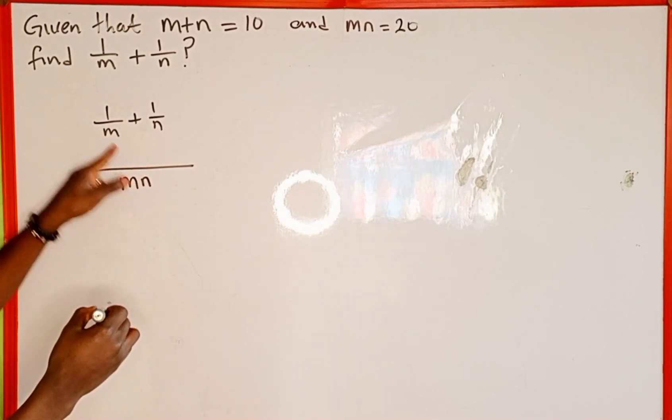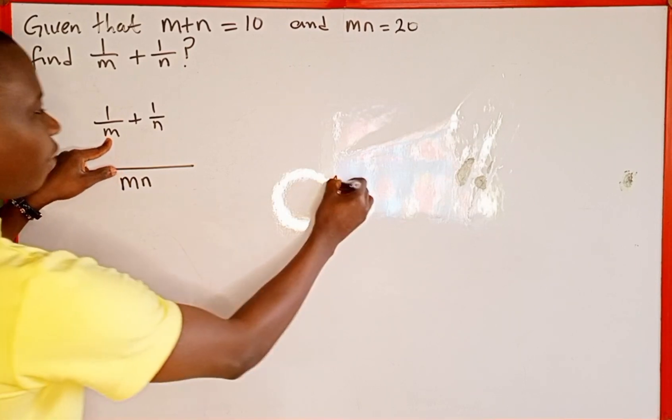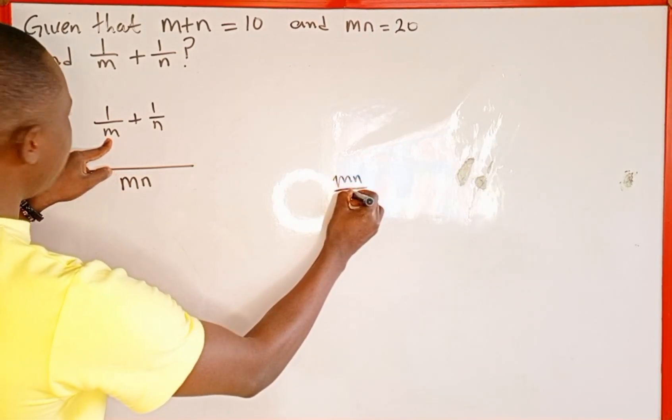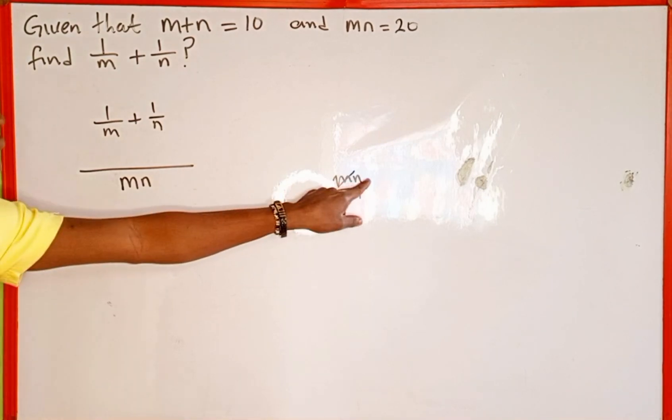Now we're going to divide. m n divided by m—this m and m will cancel, leaving n, and that n multiplied by 1 gives us n.